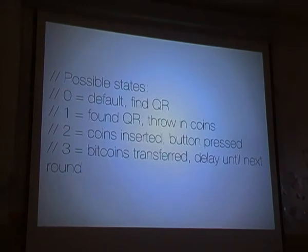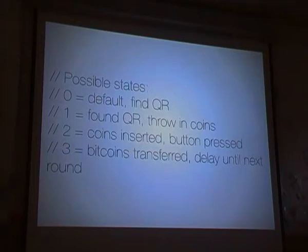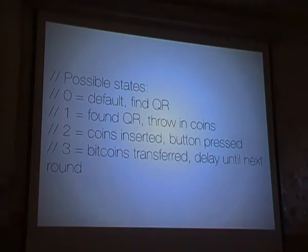I'm going to get a little bit into the code. I built a little state machine to get it working. State zero is the default when you just enter the machine — it's in default mode. It will try to look if a QR code is present in front of the camera. When it finds a QR code, it will put it to state 1, and you will hear a click — that's when the coin acceptor actually starts accepting coins. When it is not detecting any QR code, the money will fall right through and you can get it back at the front.